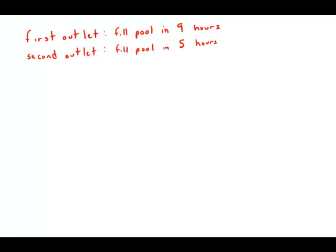The water from one outlet flowing at a constant rate can fill a swimming pool in 9 hours. The water from a second outlet flowing at a constant rate can fill the same pool in 5 hours. If both outlets are used at the same time, approximately, what is the number of hours required to fill the pool?